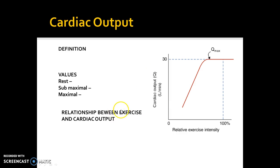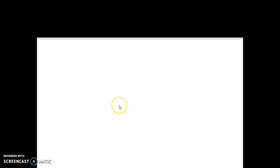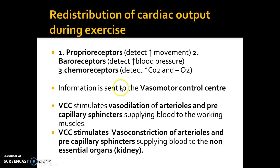We looked at the fact that when you start to exercise, the volume of blood ejected from the heart per minute is going to increase. Today's lesson is going to move on to a new topic, which is the concept of the redistribution of cardiac output during exercise.